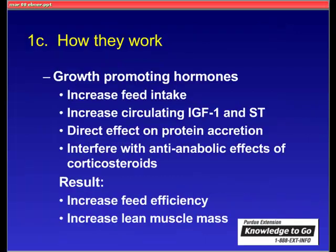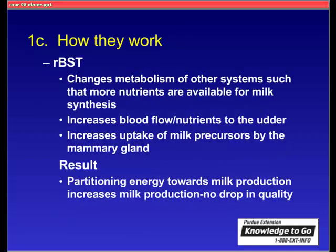In terms of how growth-promoting hormones work in beef cattle, they increase feed intake, which changes body composition. They increase circulating insulin-like growth factor 1 and somatotropin, which affect different metabolic processes and change body composition. Some have a direct effect on protein accretion, while others interfere with the anti-anabolic effects of corticosteroids. The result is increased feed efficiency and increased lean muscle mass. RBST works by changing the metabolism of other systems within the cow such that more nutrients are available for milk production, with increased blood flow of nutrients to the udder and increased uptake of milk precursors by the mammary gland — resulting in a partitioning of energy towards milk production with a concomitant increase in milk production and no drop in quality.